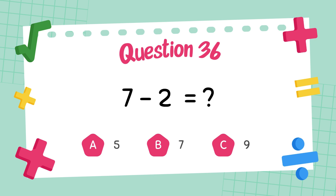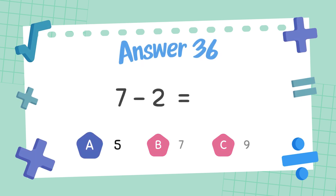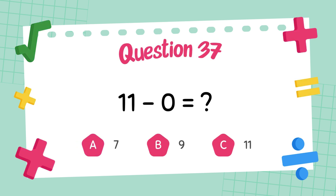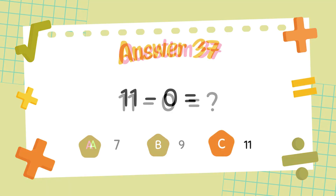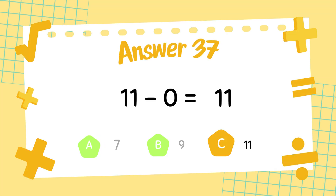What is 7 minus 2? The answer is 5. What is 11 minus 0? The answer is 11.